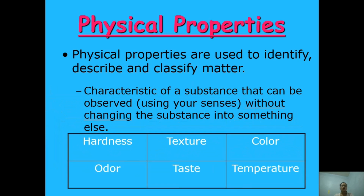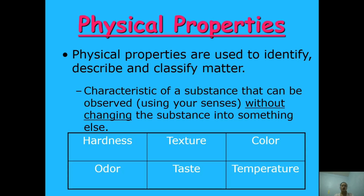Here are some of the physical properties that are used to identify, describe, and classify matter: hardness, texture, color, odor, taste, and temperature.